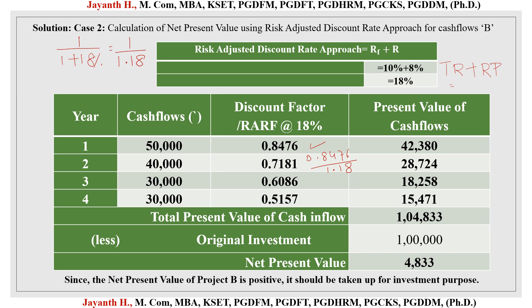Continuing: 0.7181 divided by 1.18 gives the year 3 factor of 0.6086, and year 4 gives 0.5157. Multiplying cash flows by discount factors: 50,000 × 0.8476 = 42,380; 40,000 × 0.7181 = 28,724; 30,000 × 0.6086 = 18,258; 30,000 × 0.5157 = 15,471. The total present value is 1,04,833. Subtracting the initial investment of 1,00,000 gives an NPV of 4,833, which is positive.